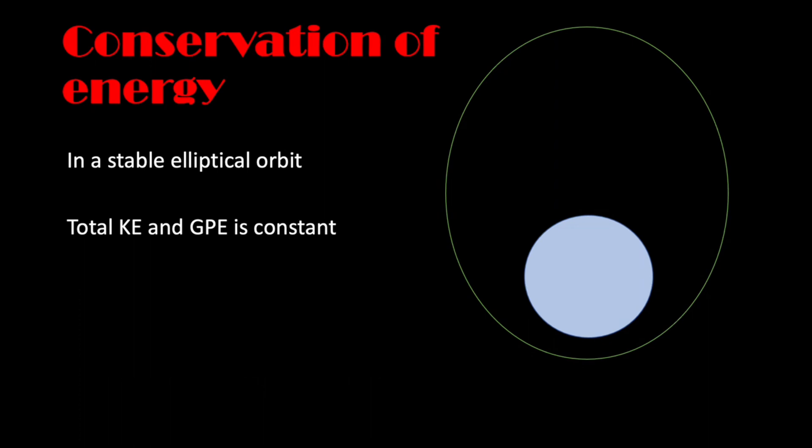Now gravitational potential energy is based on the distance. The further you are from the center of the planet, the greater your gravitational potential energy. We're going to be a bit simple here. It's a little bit more complex than that. In kinetic energy, the faster that you are moving, the greater your kinetic energy.